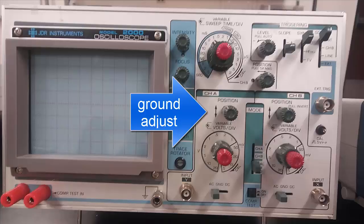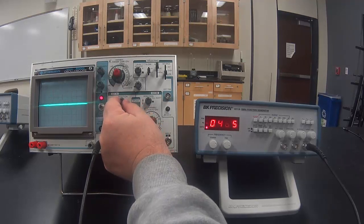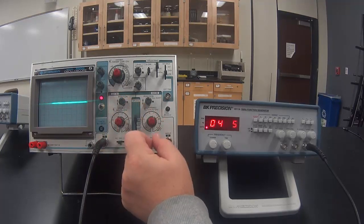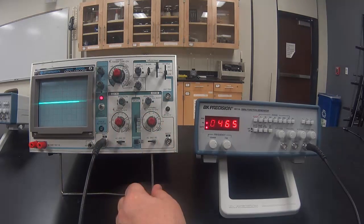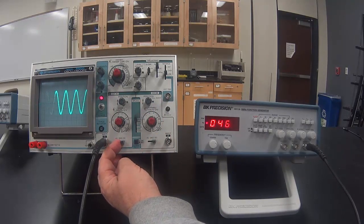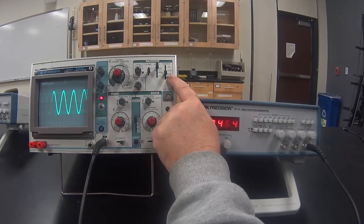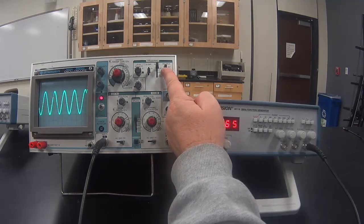This is the ground adjust knob or the voltage position. It decides at what vertical level the ground will be displayed. We generally adjust the ground level to some line on the oscilloscope that's convenient to measure from. After we have adjusted the ground, we put our coupling back on DC. The trigger source is still on line and the signal is unstable. We need to trigger internally.